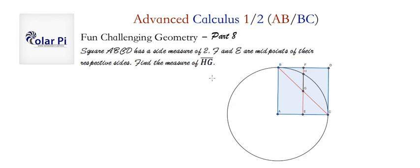Okay, now here we have that square ABCD has a side length of 2, and E and F are midpoints of the sides AC and BD respectively.